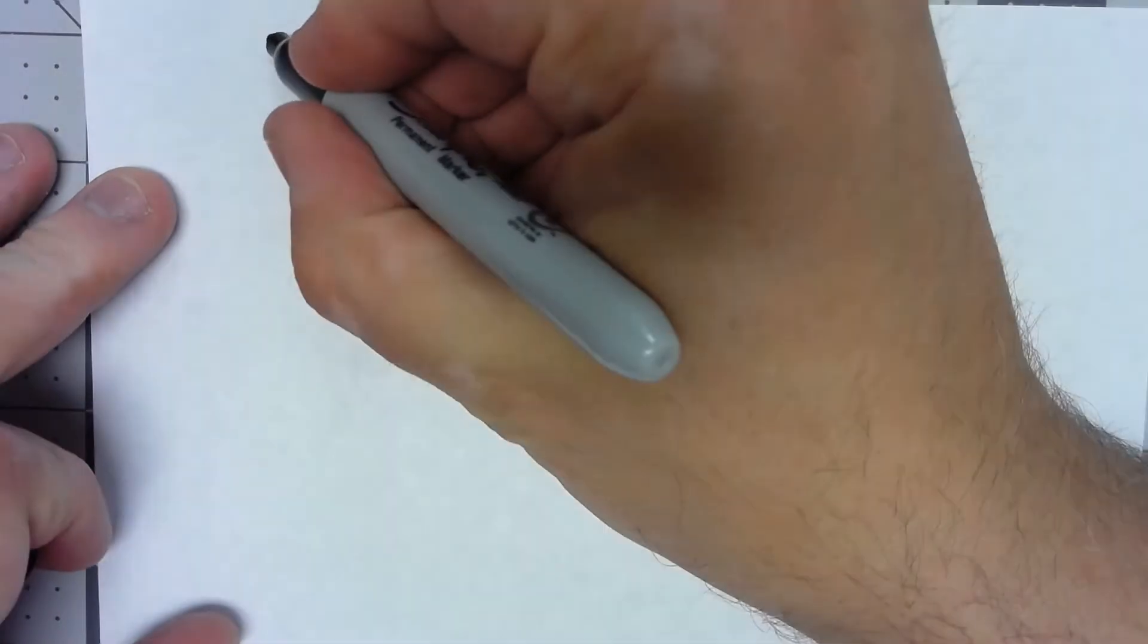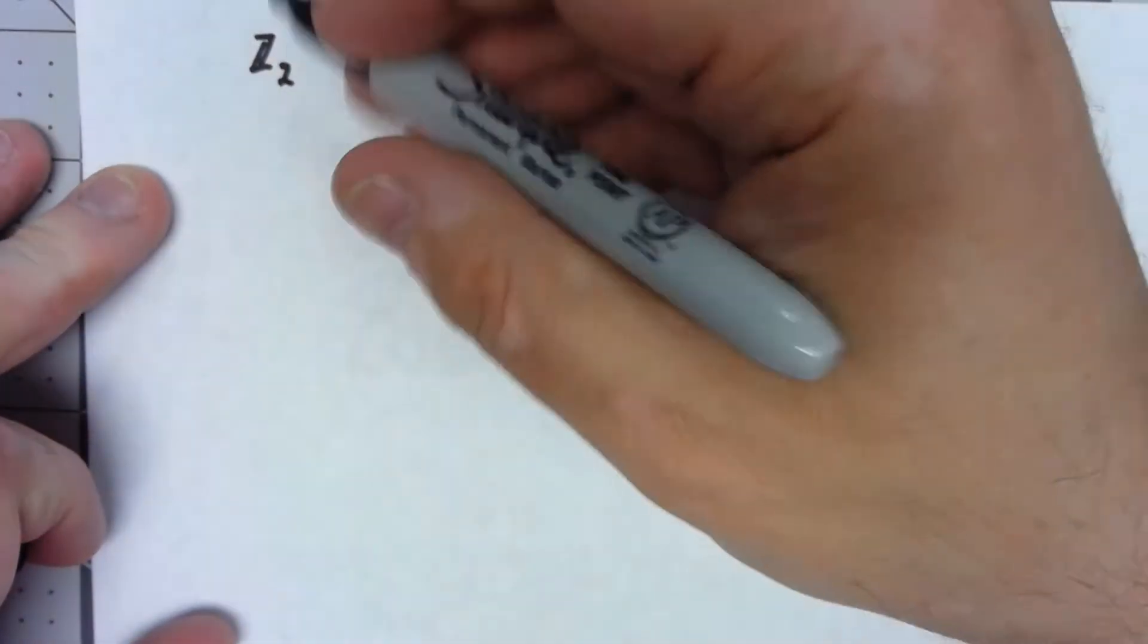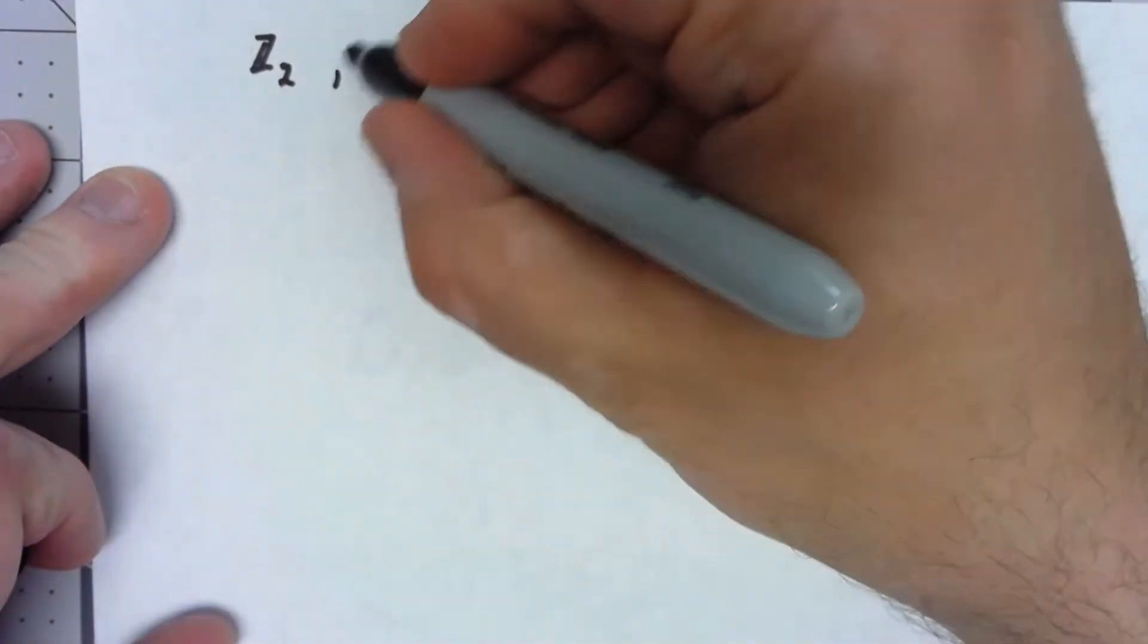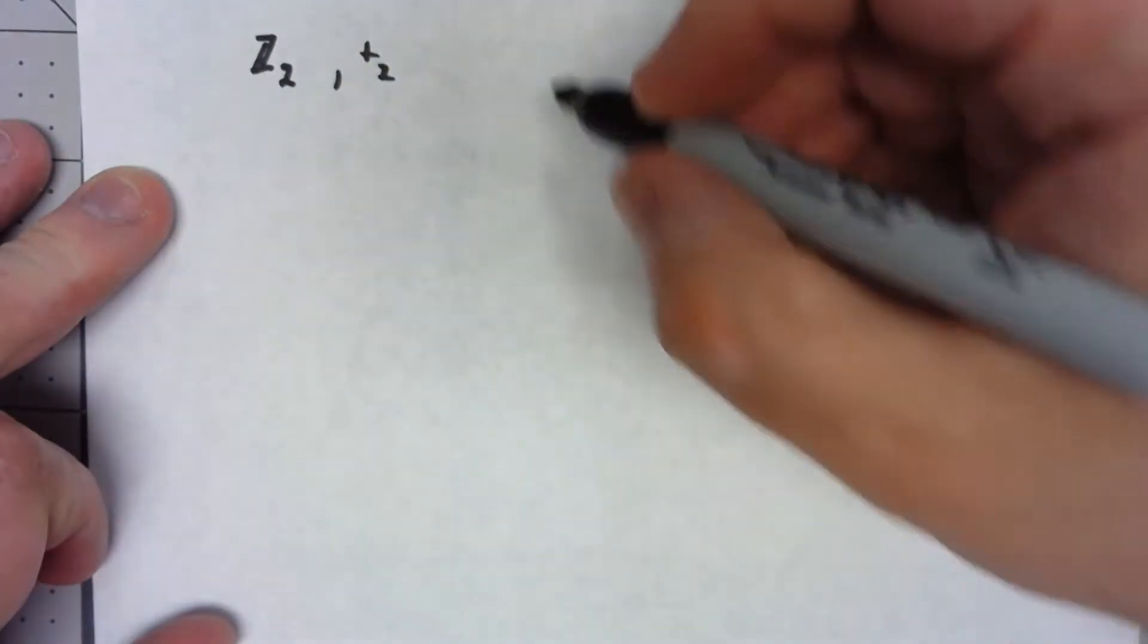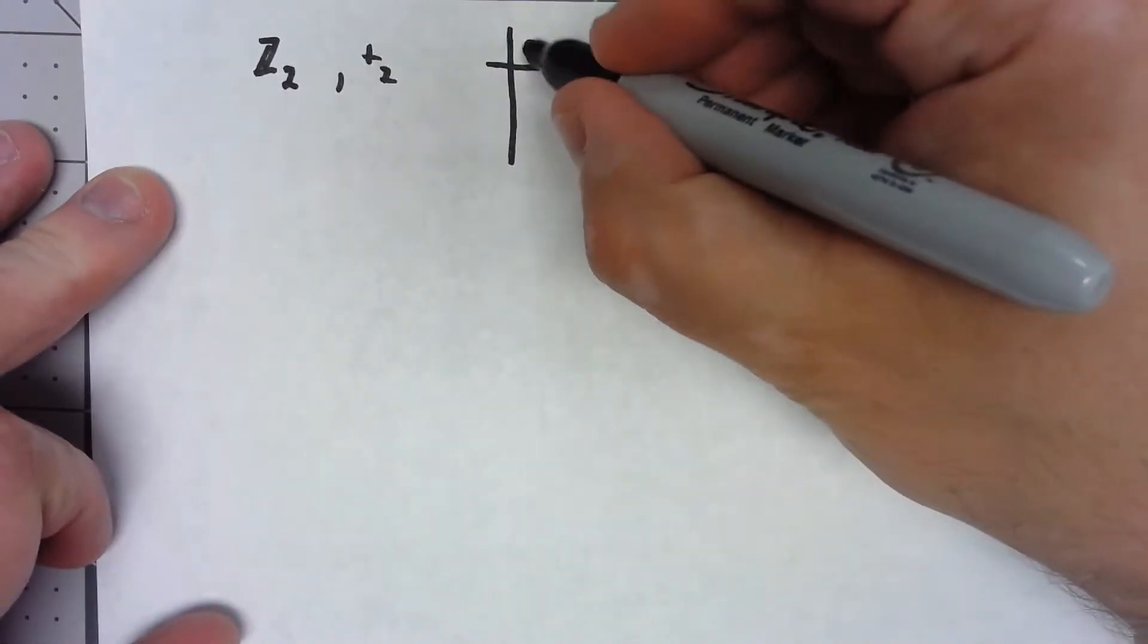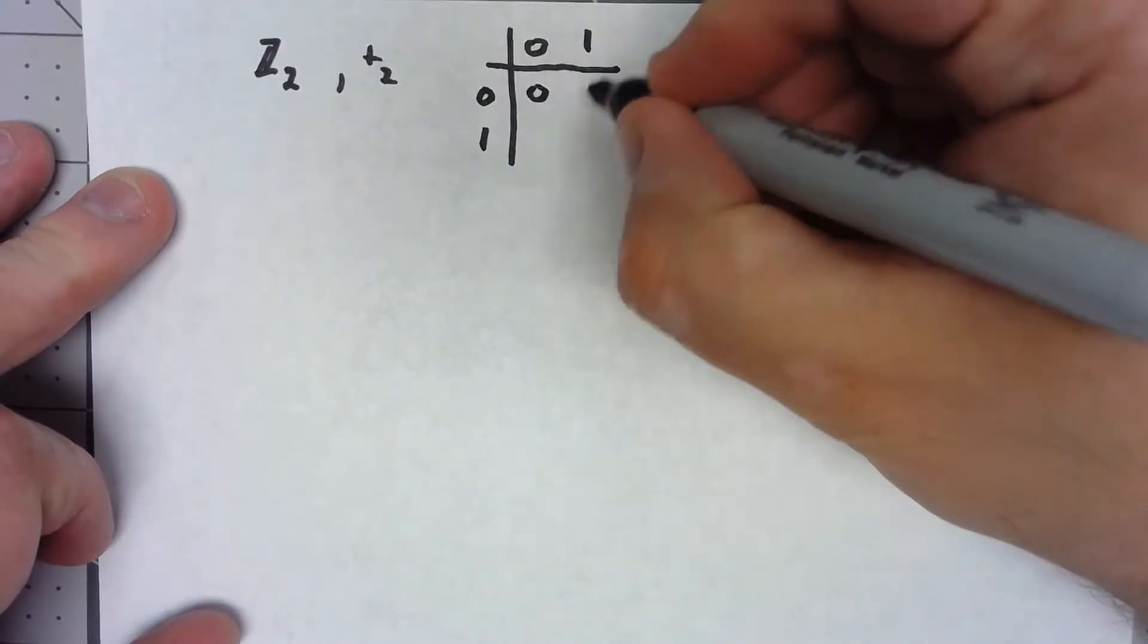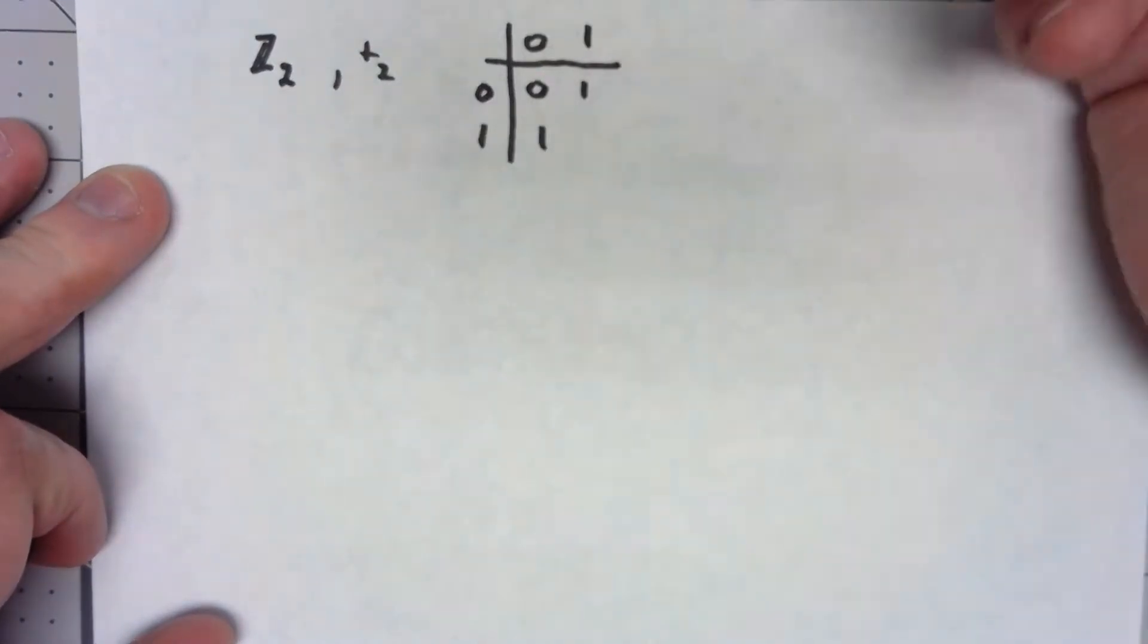Let's take a look at two simple groups that we've looked at several times. First, let's look at the integers mod 2, such as 0 and 1, under addition mod 2. Let's go ahead and look at the Cayley table. Since the only elements are 0 and 1, we know 0 plus anything is that thing, 1 plus 1 is 2 mod 2, which is 0. Very simple.